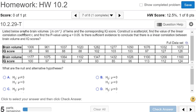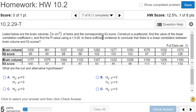Listed below are the brain volumes of twins and corresponding IQ scores. Construct a scatterplot and find the value of the linear correlation coefficient R, the p-value using 0.05, and determine if there is sufficient evidence to conclude that there is linear correlation between brain volume and IQ scores.